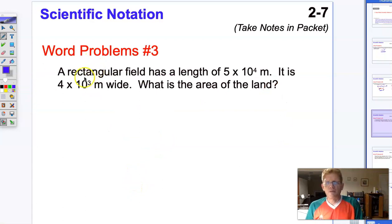We've got one last problem here. A rectangular field has a length of 5 × 10⁴ meters. It is 4 × 10³ meters wide. What is the area of the land? So this is rectangular, and hopefully you remember that the area of a rectangle is equal to length times width.